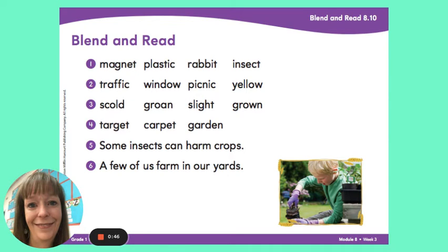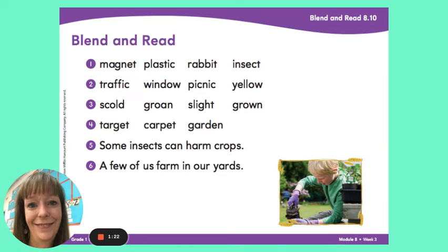Let's look at the word magnet. Where would you break it up? Yes, between the two consonants, G and N. Magnet. Let's look at insect. Where would you break it up? Once again, between the two consonants, N and S. Insect.